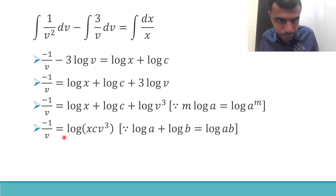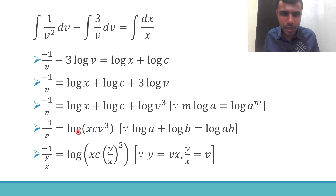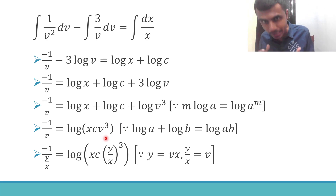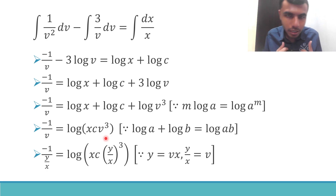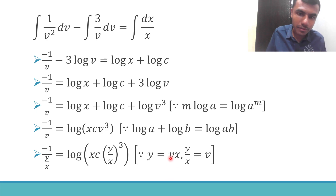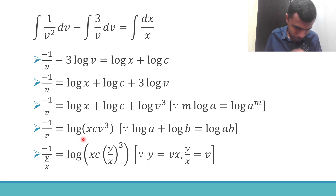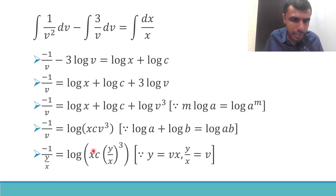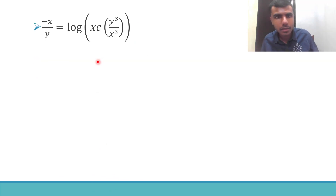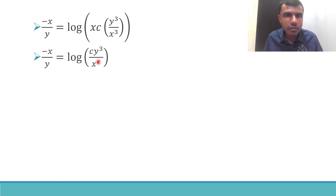Now v is something we introduced — ultimately the final answer needs to be in x and y. We took y = vx, so v equals y/x. In place of v I substitute y/x: minus 1/(y/x) is minus x/y, and on the RHS it's x·c·(y/x)³ equals x·c·y³/x³. One x and one x cancel, leaving cy³/x².